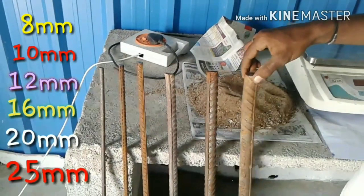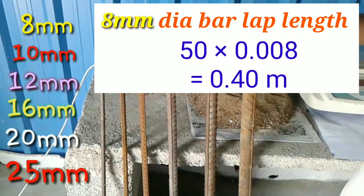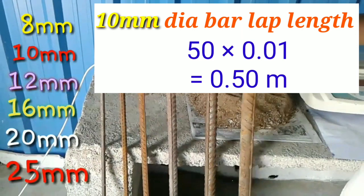Now calculating the overlapping length for different diameter bars. For 8mm dia bar: 50 × 0.008 = 0.4 meter. For 10mm dia bar: 50 × 0.01 = 0.5 meter.